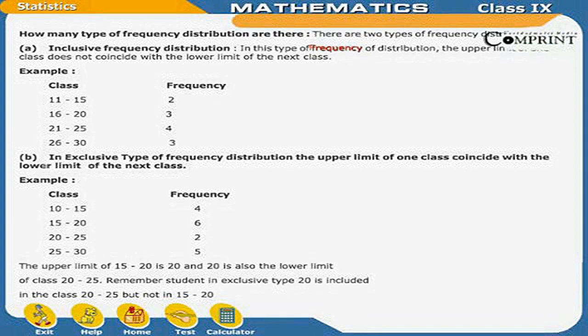Second, exclusive type of frequency distribution. In this type, the upper limit of one class coincides with the lower limit of the next class. For example: Class 10-15 Frequency 4, 15-20 Frequency 6, 20-25 Frequency 2, 25-30 Frequency 5. The upper limit of 15-20 is 20, and the lower limit of 20-25 is also 20. Remember, students, in exclusive type, 20 is included in the class 20-25 but not in 15-20.